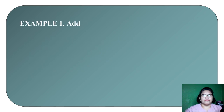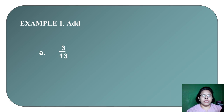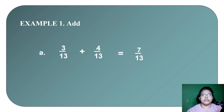Let's have examples. Example 1, let's add. Letter A: we have 3 over 13, or 3 thirteenths, plus 4 thirteenths. So, 3 thirteenths and 4 thirteenths — this is 7 thirteenths. We just add the numerators and copy the denominator.